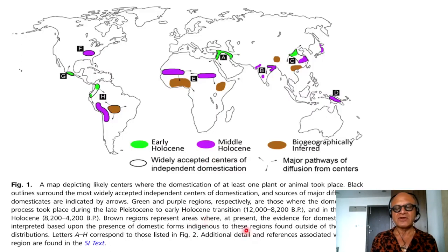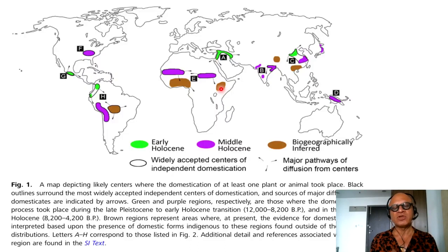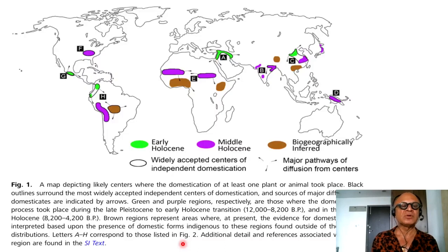Brown regions represent areas where the evidence for domestication is interpreted based upon the presence of domestic forms indigenous to these regions found outside their native distribution. So in these regions, there are animals and plants that are non-native — could be potatoes, corn, maize, cattle, sheep — and they are inferred as where domestication happened through these networks. These are not independent centers of domestication. Letters A to H correspond to those listed in another figure.